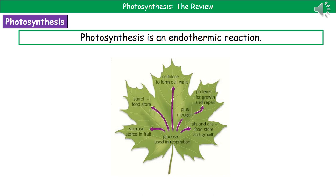Glucose has a range of different uses within the plant, as represented in the diagram on the slide. We can use the glucose made in photosynthesis for respiration; convert it into sucrose, which is stored in fruit; change it into starch by joining glucose molecules together as a storage form; use it to make cellulose for cell walls; add nitrogen to glucose to make proteins; or convert it into fats and oils, also used as a food store.